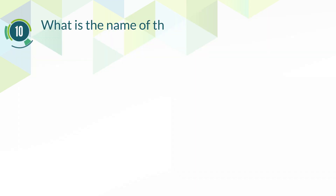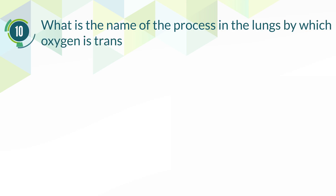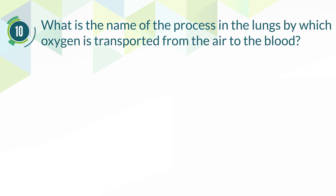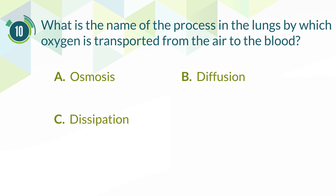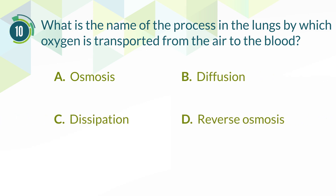Number 10. What is the name of the process in the lungs by which oxygen is transported from the air to the blood? A. Osmosis. B. Diffusion. C. Dissipation. D. Reverse osmosis.